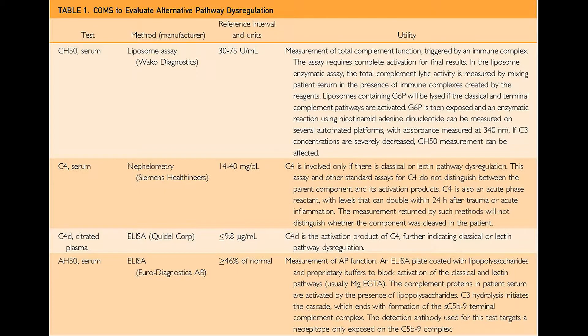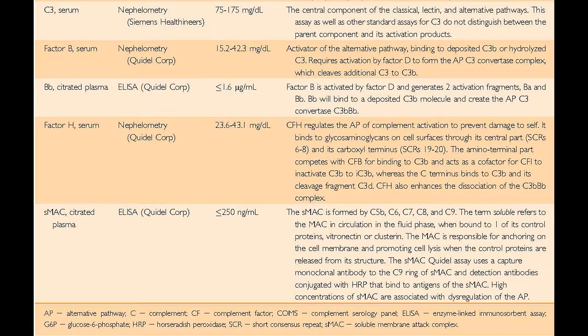A nine-analyte panel became available in January 2015, and it's described in Table 1 of our manuscript. It covers complement classical and alternative pathway functions, complement proteins, and activation markers. In our study, we aimed to assess our practices in ordering this complement serology panel, as well as determining its clinical utility for the diagnosis of AHUS.